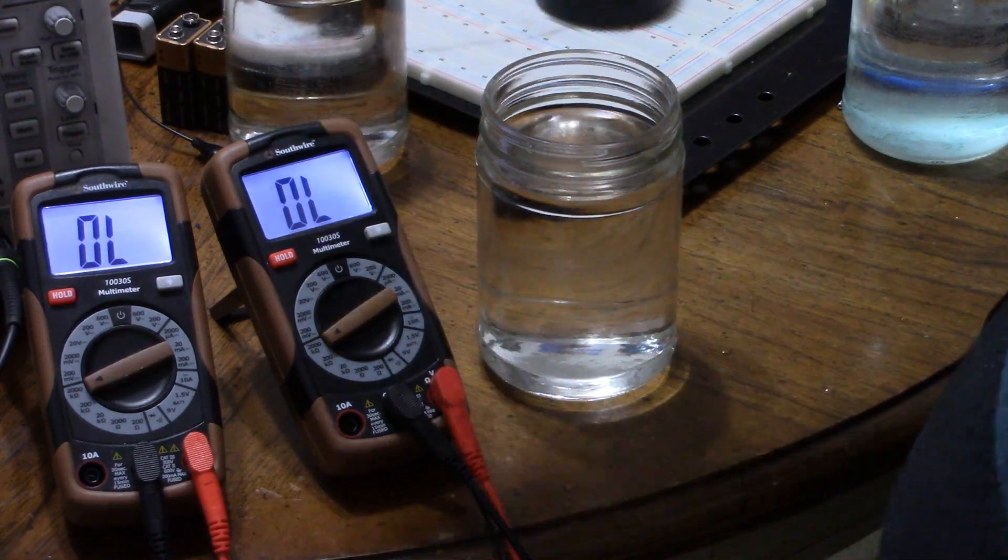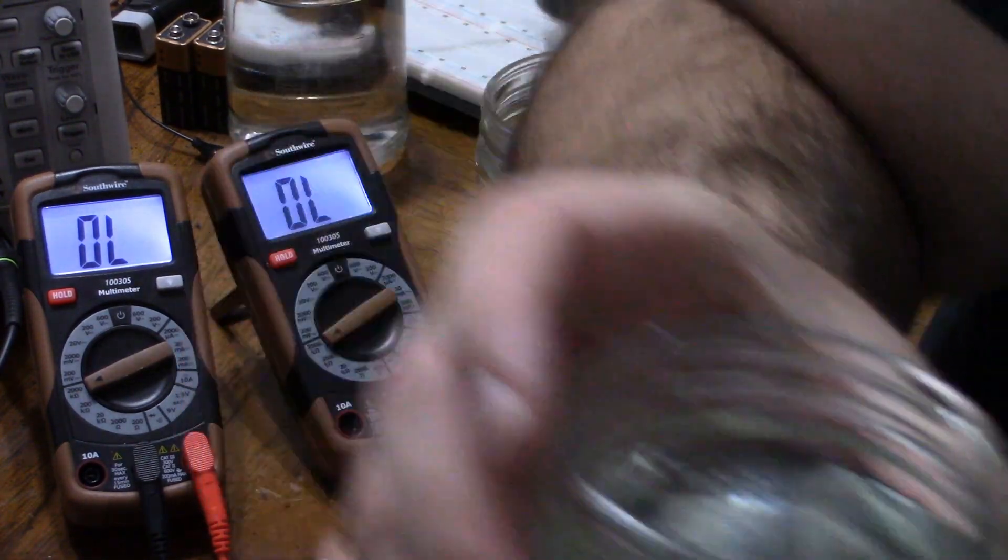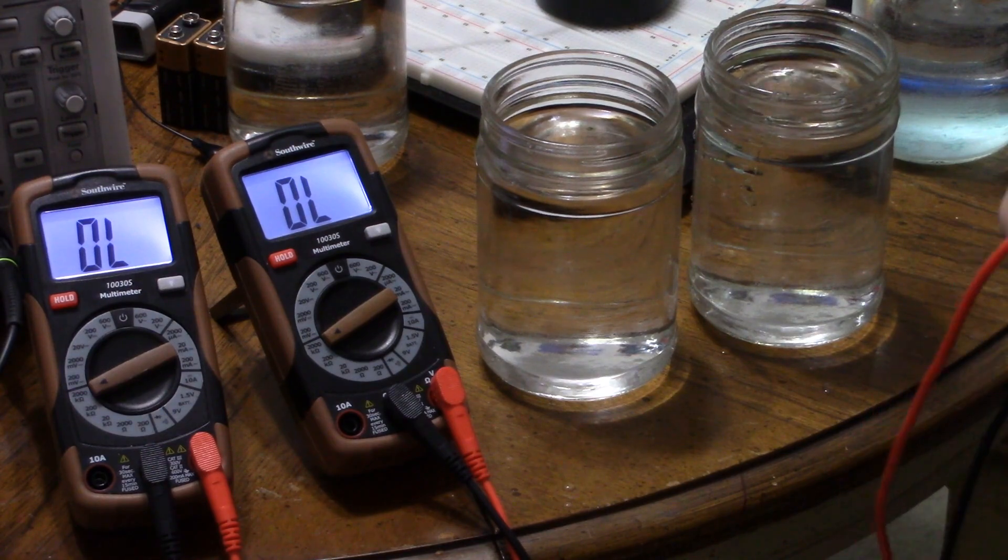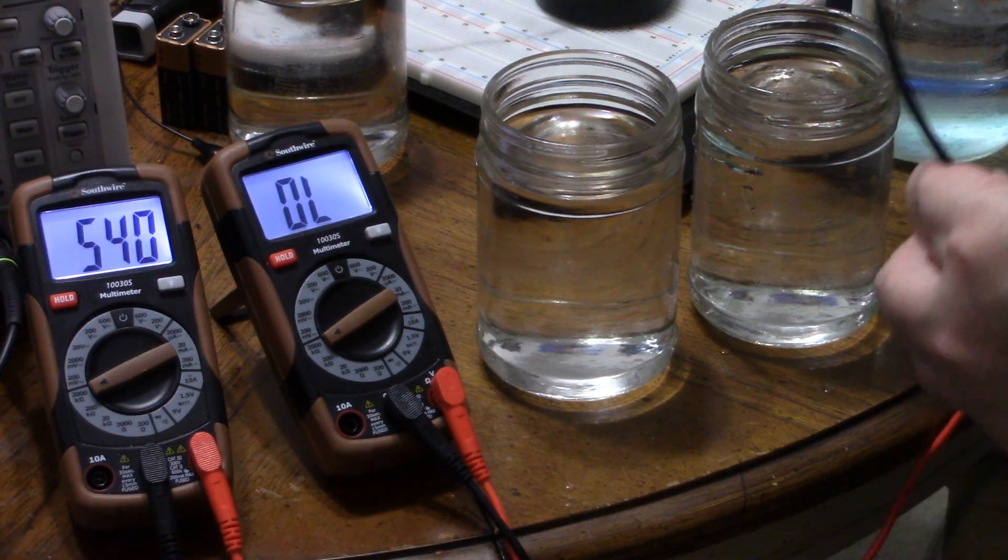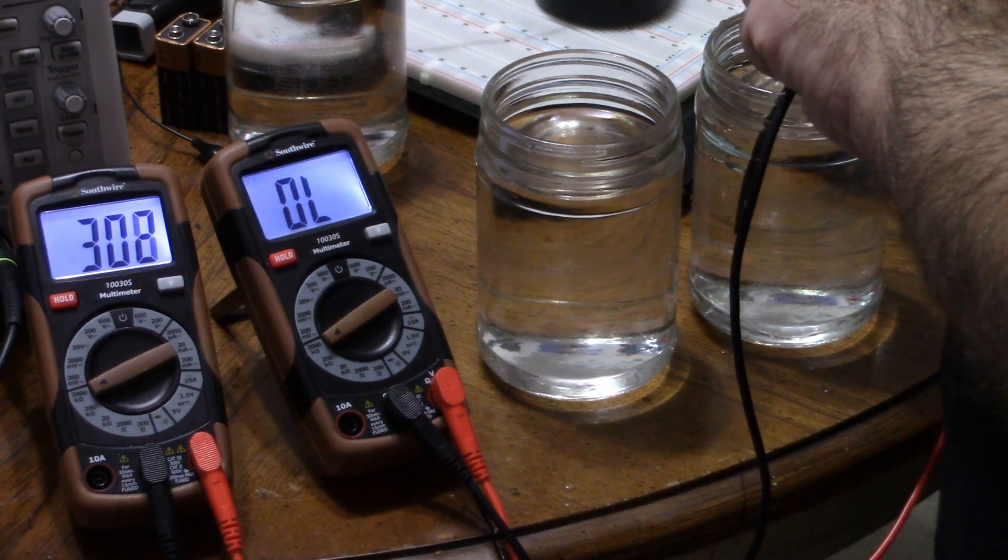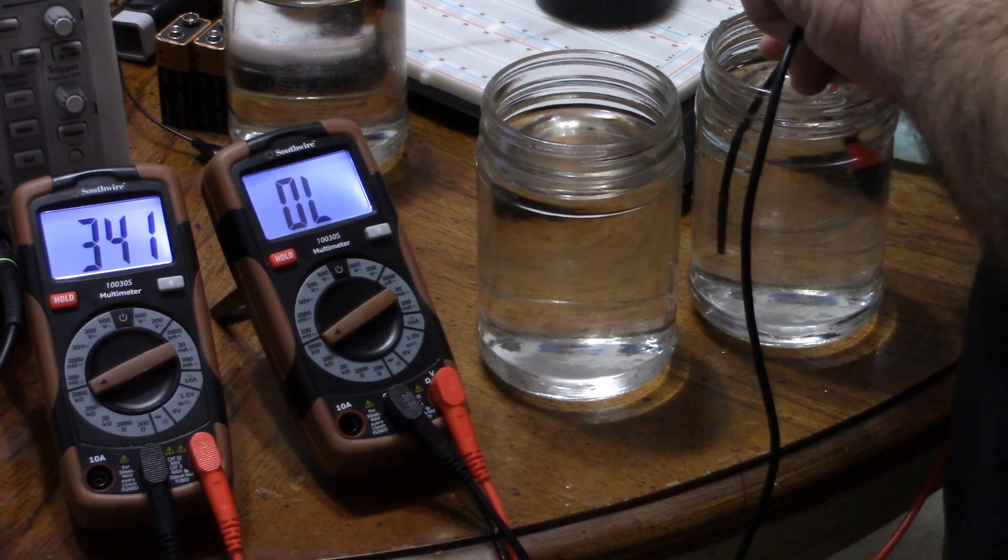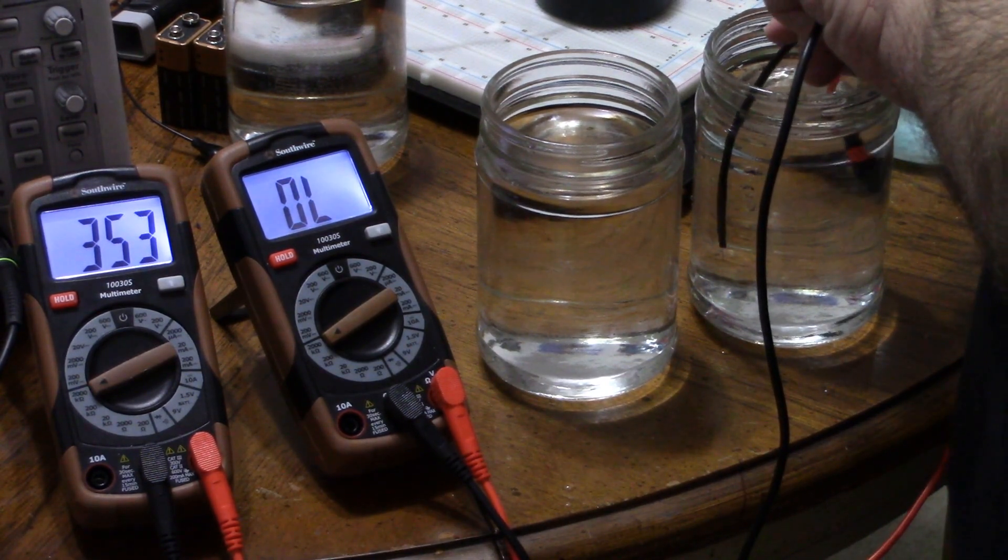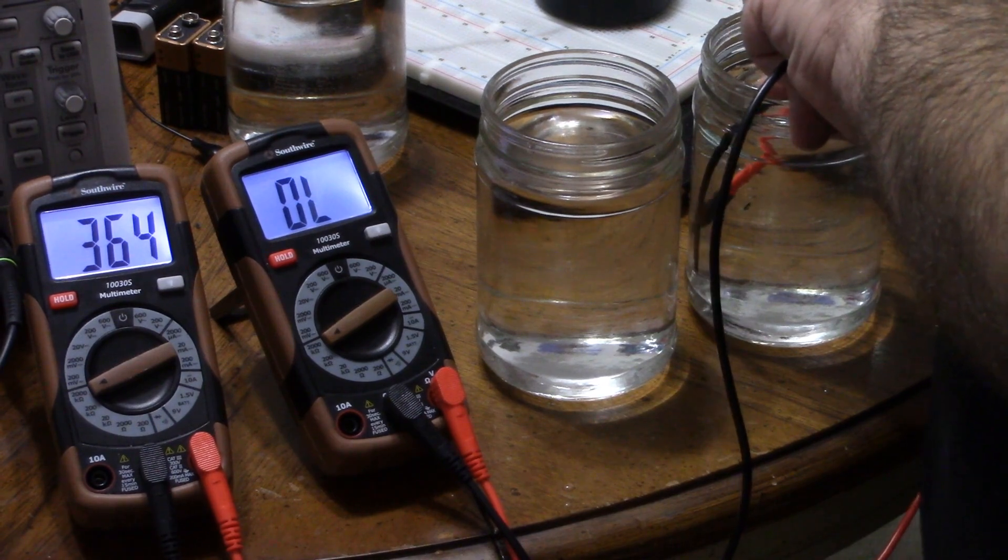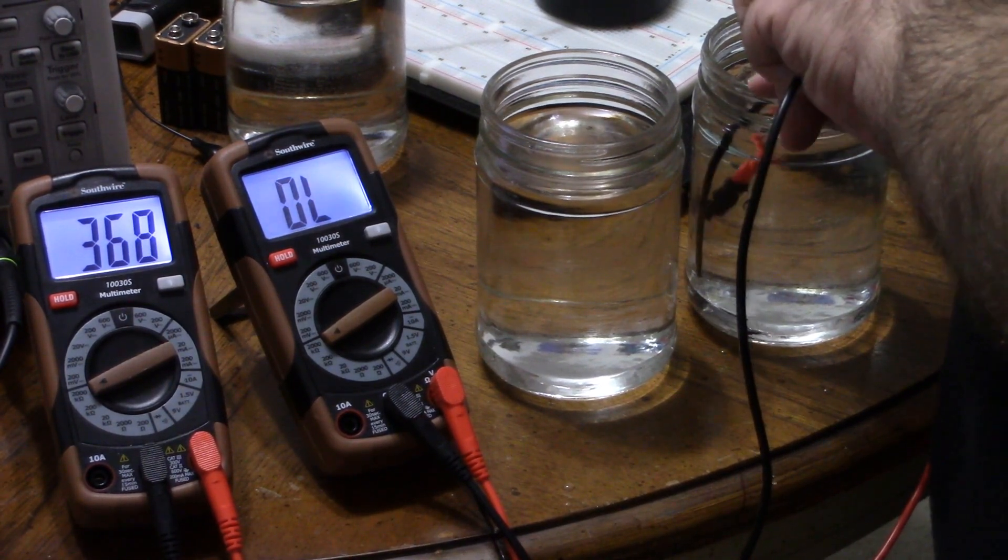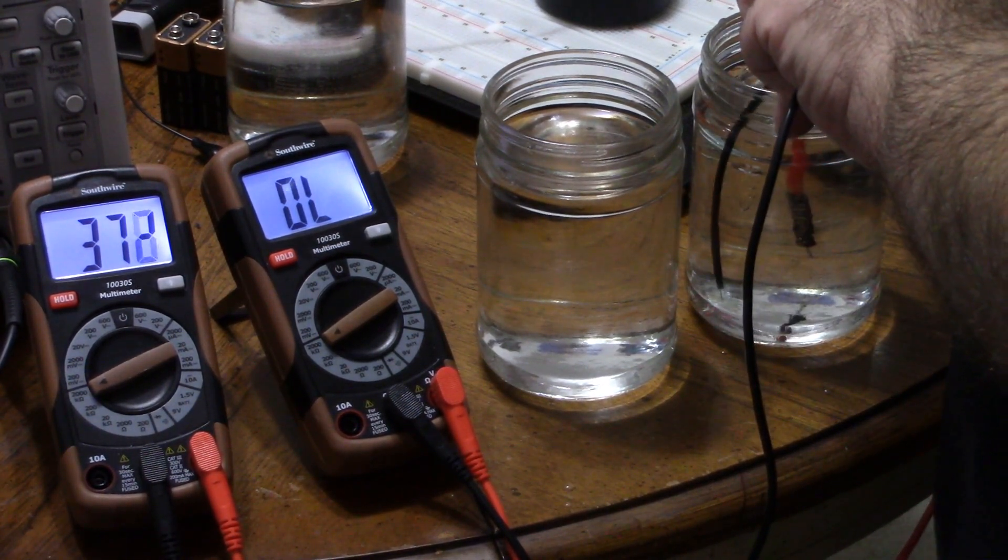So now what I'm going to do is get some tap water straight out of my bathroom sink. Here we have tap water from the bathroom sink. Probes are working, and when I stick it in that water, all of a sudden. Now you might think that's a lot of ohms. Yeah, that's a lot of ohms. But when you're dealing with 120 or 220 volt alternating current, there's not so many ohms anymore, is it?